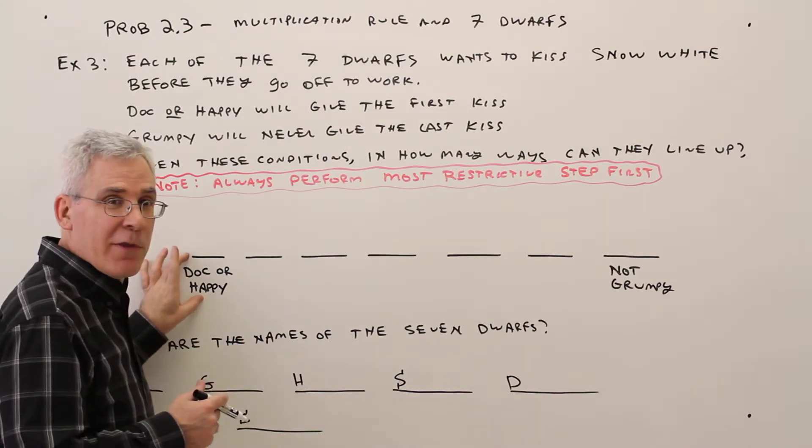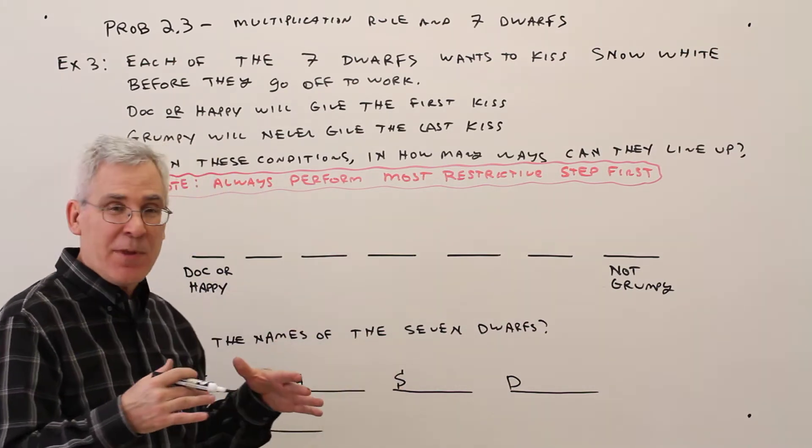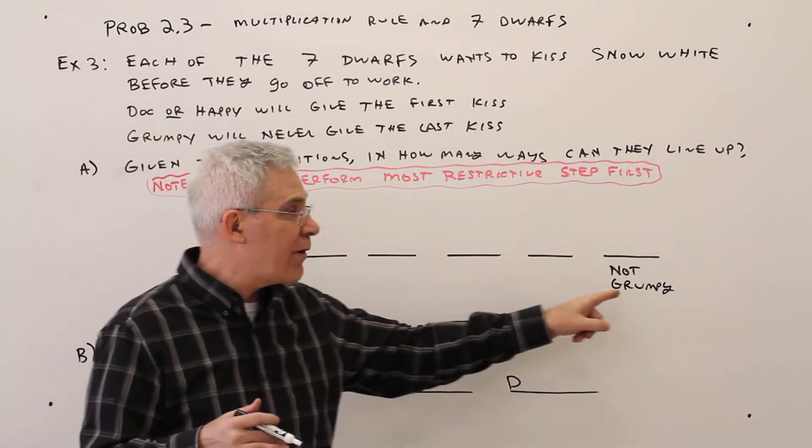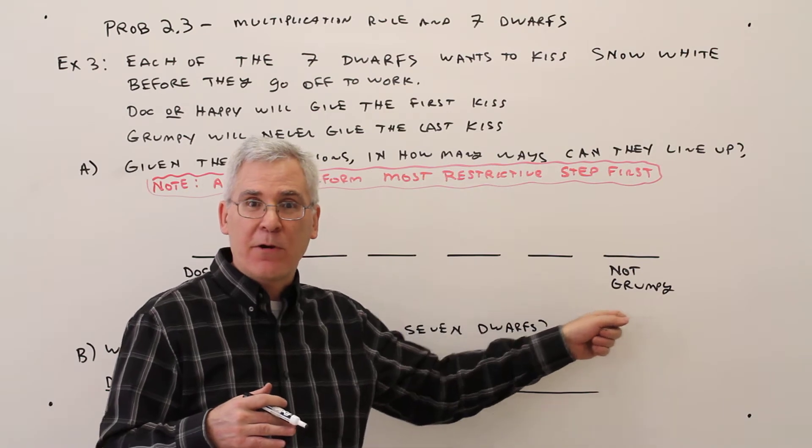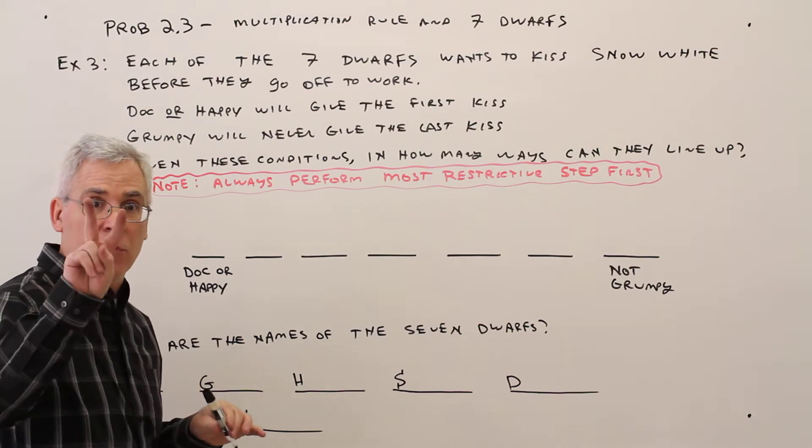Let's do this one. This one's going to be kind of challenging because it could only be Doc or Happy. That's actually more restrictive than this one over here. All right, so how many ways are there to perform that step? Two.